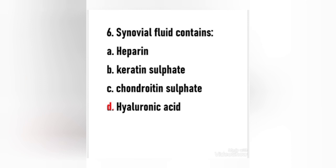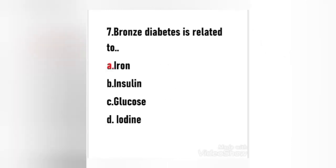Next question: Synovial fluid contains — (a) heparin, (b) keratin sulfate, (c) chondroitin sulfate, (d) hyaluronic acid. The right answer is option D — synovial fluid contains hyaluronic acid. Next question: Bronze diabetes is related to — (a) iron, (b) insulin, (c) glucose, (d) iodine. The right answer is option A. Bronze diabetes is related to iron. It is also known as hemochromatosis — a genetic disorder characterized by excessive intestinal absorption of dietary iron, resulting in a pathological increase in total body iron stores.